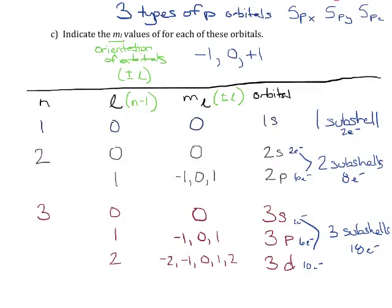Remember that our sub-shells are degenerate, which means all orbitals within a sub-shell have the same energy value. So any electron in a 3d orbital — any one of those five orbitals — is going to have the same energy because those orbitals are degenerate.